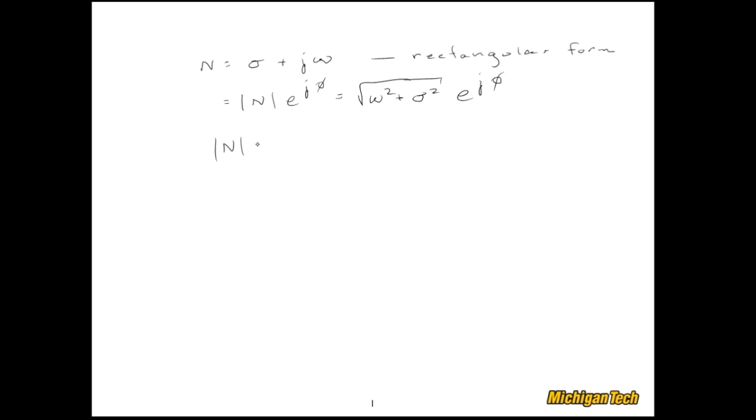Again, that N is the magnitude and phi is the phase angle. Let's take a closer look at this phase angle. The way to do that is to plot your complex number in the real and imaginary complex plane. So sigma is the real part, omega is the imaginary part, this distance is N, and this angle is phi. Now we can see that phi is equal to the inverse tangent of omega over sigma, the imaginary part over the real part.